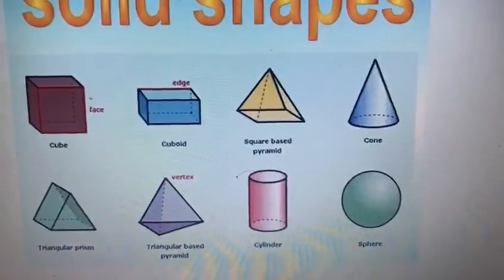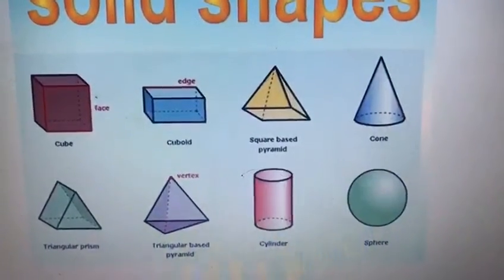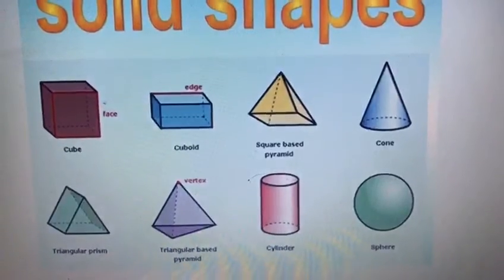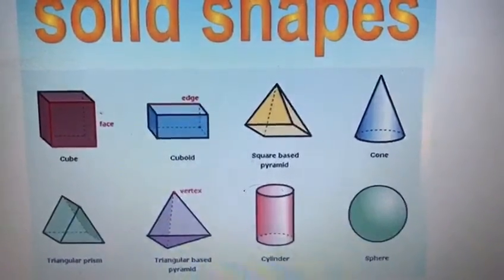Now as you can see, the pink one is cylinder. Cylinder looks like a little rectangle. And the last one is sphere. The sphere looks like a ball. So how many solid shapes we have? One, two, three, four, five, six, seven, eight.